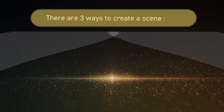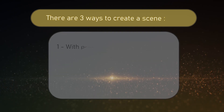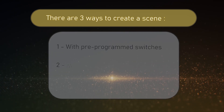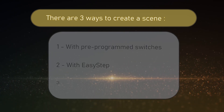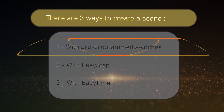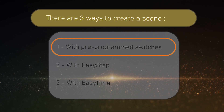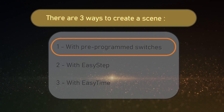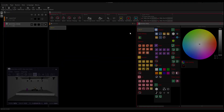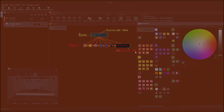There are three ways to create a scene: with pre-programmed switches, with Easy Step, or with Easy Time. This tutorial explains the first option. A scene enables you to trigger several parameters at the same time, as if you were pressing switches all at once.